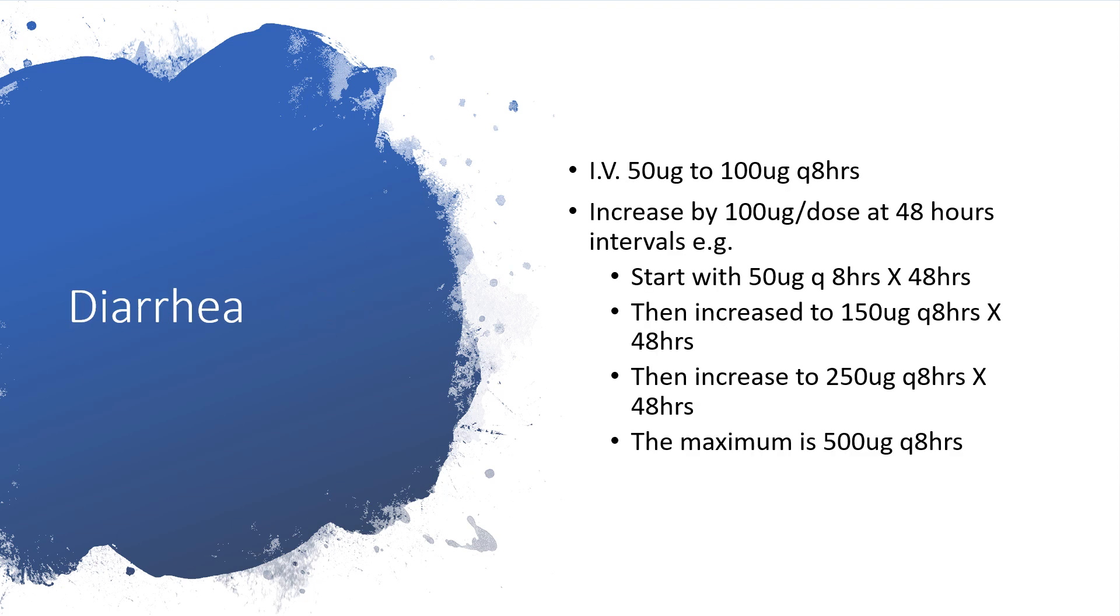If you are dealing with diarrhea, start with intravenous dosage of 50 to 100 mcg every 8 hours. You can increase by 100 mcg per dose at 48-hour intervals. For example, with chronic diarrhea, first give Octreotide at 50 mcg every 8 hours for 48 hours. If not winning, increase to 150 mcg every 8 hours. After another 48 hours, you can increase to 250 mcg every 8 hours. The maximum you could reach every 8 hours is 500 mcg.